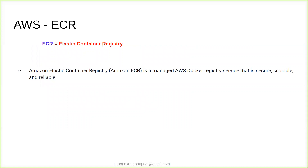Before jumping to the lab, let's see exactly what ECR is. ECR stands for Elastic Container Registry. Amazon Elastic Container Registry is a managed AWS Docker registry service that is secure, scalable, and reliable. Amazon ECR supports private Docker repositories with resource-based permissions. We can also use IAM permissions for specific users, or Amazon EC2 instances can access repositories and images. Developers can use the Docker CLI to push, pull, and manage all the images.